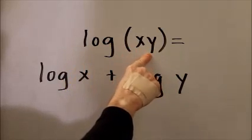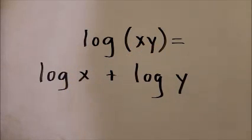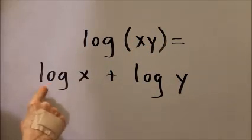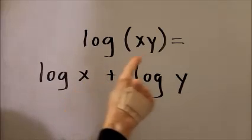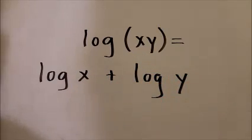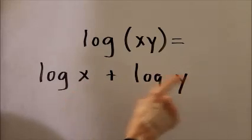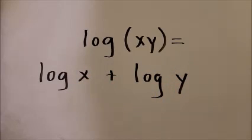The logarithm of a product of any two numbers, as long as that product is positive, equals the logarithm of the one number plus the logarithm of the other. And both of these numbers must be positive real numbers. Remember, the logarithm of zero is not defined, and the logarithm of any negative number is not defined, at least not in the set of real numbers, and that's what we are confining ourselves to here.